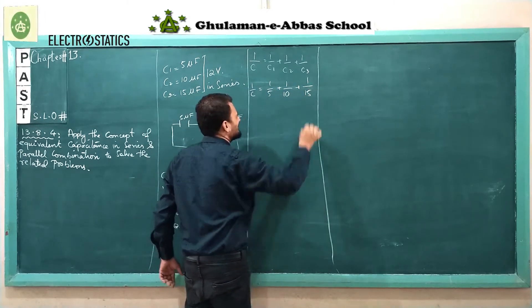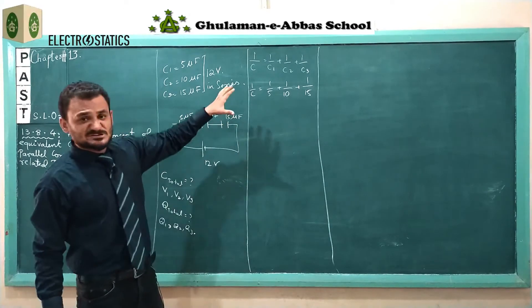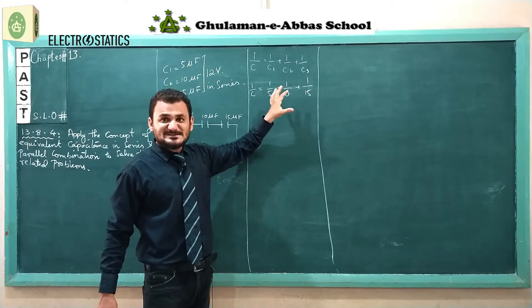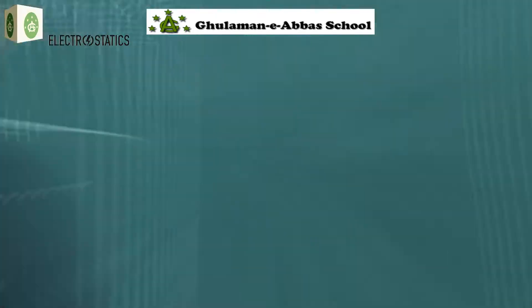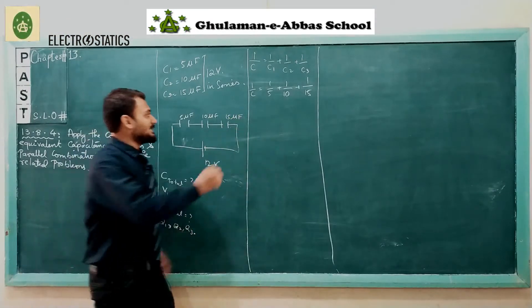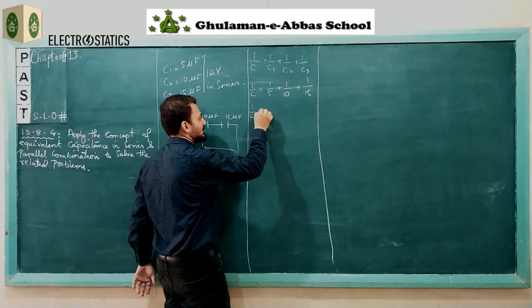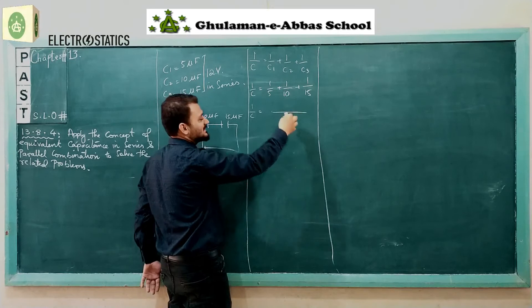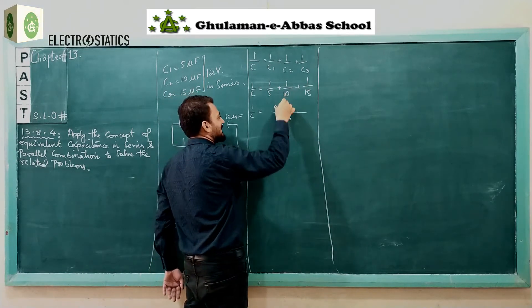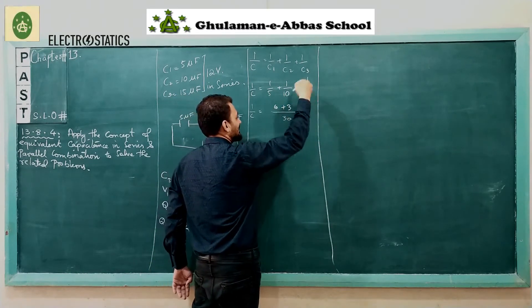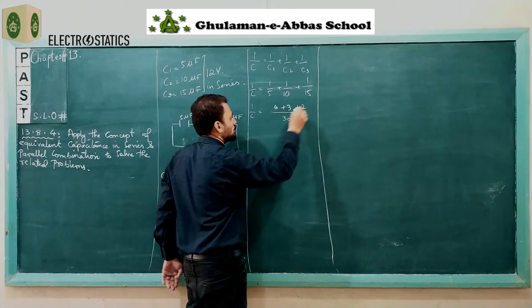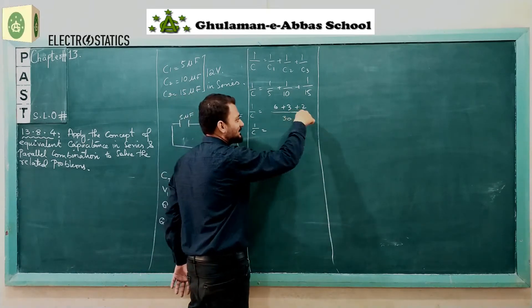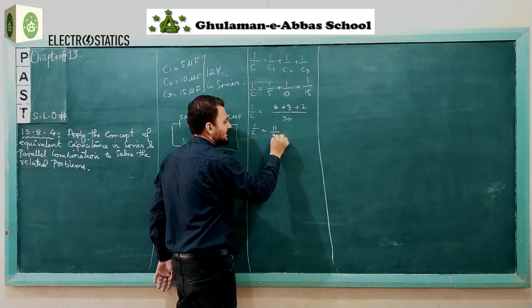We have our expression. Now let's take the LCM. The LCM of 5, 10, and 15 is 30. So: 1/C = 6/30 + 3/30 + 2/30. That gives us 1/C = (6 + 3 + 2) / 30 = 11/30.